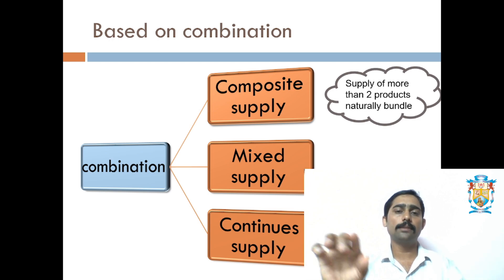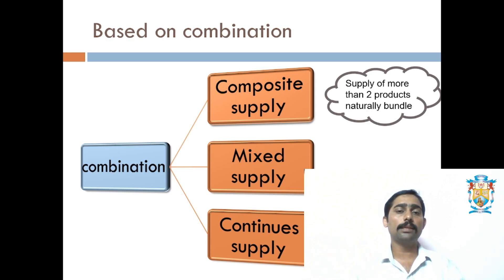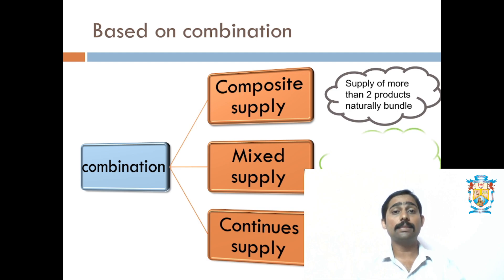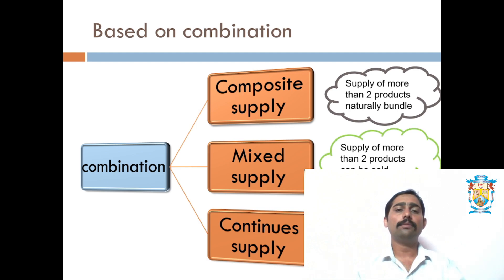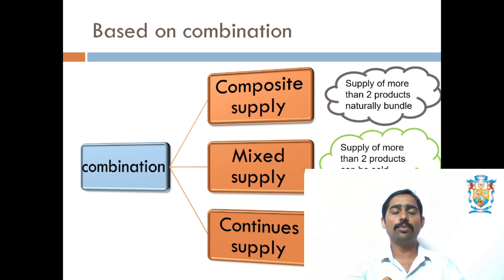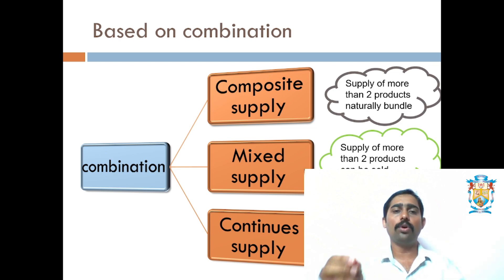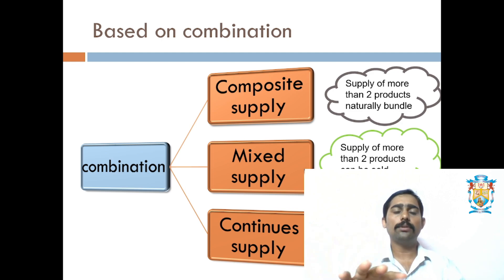When it comes to composite supply, the two products are interrelated. When it comes to mixed supply, the products being supplied together are not related to one another — they can be purchased separately. There is no natural combination and no principal product supporting another. For example, a combo of stationery containing a book, pen, and pencil — here you can purchase books separately, pen separately, pencils separately. So that is mixed supply.